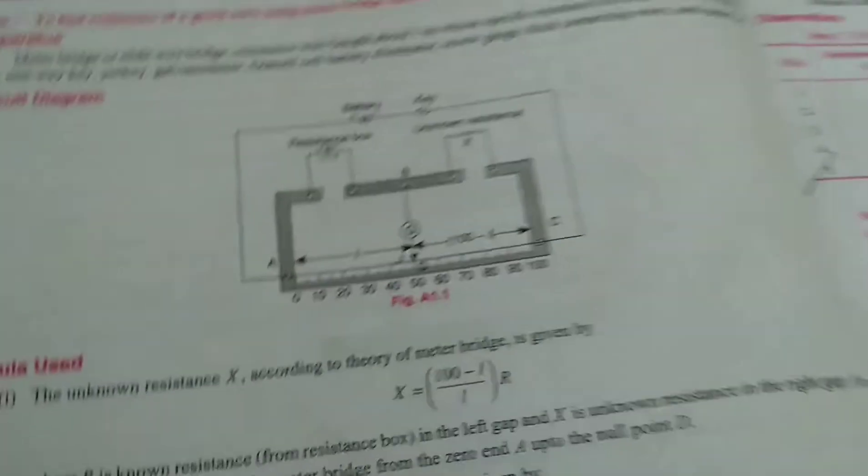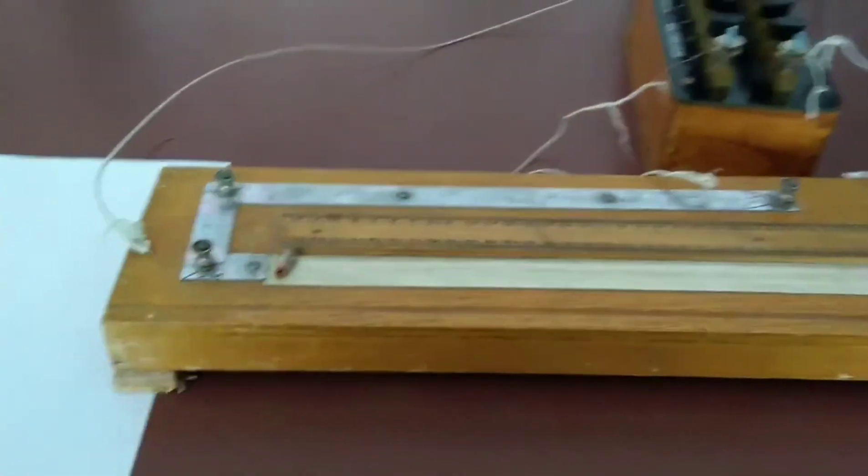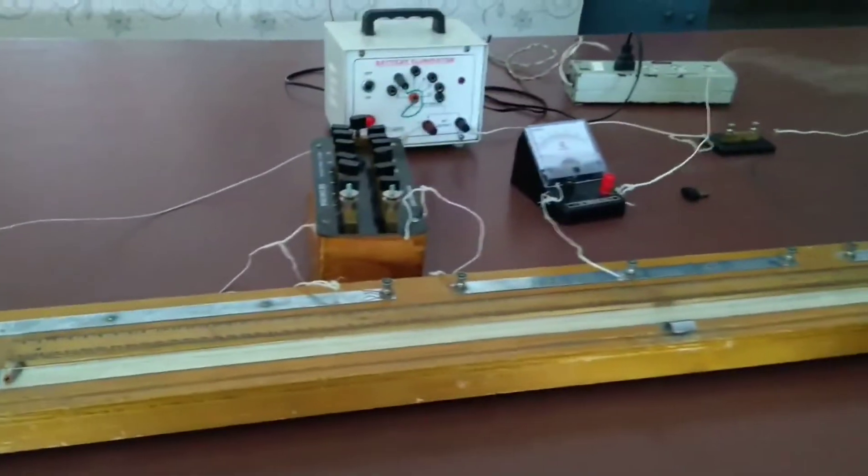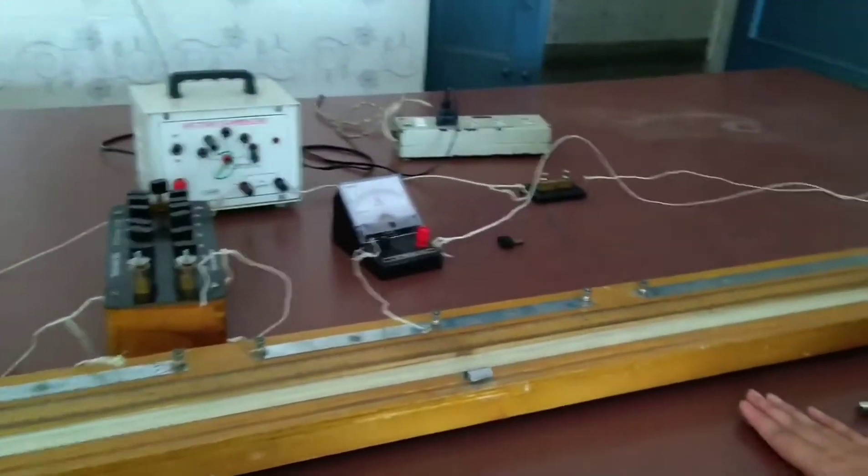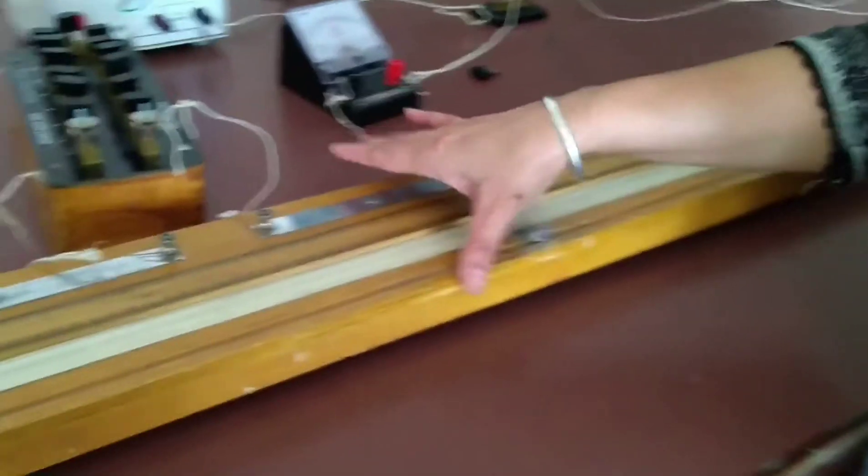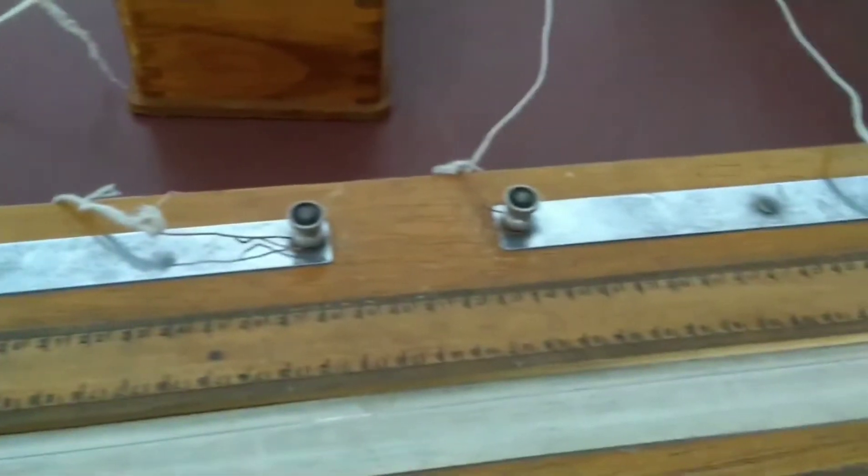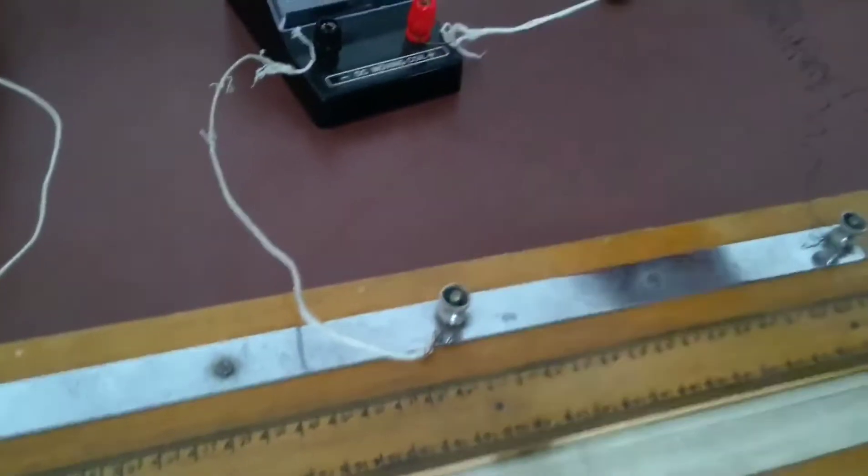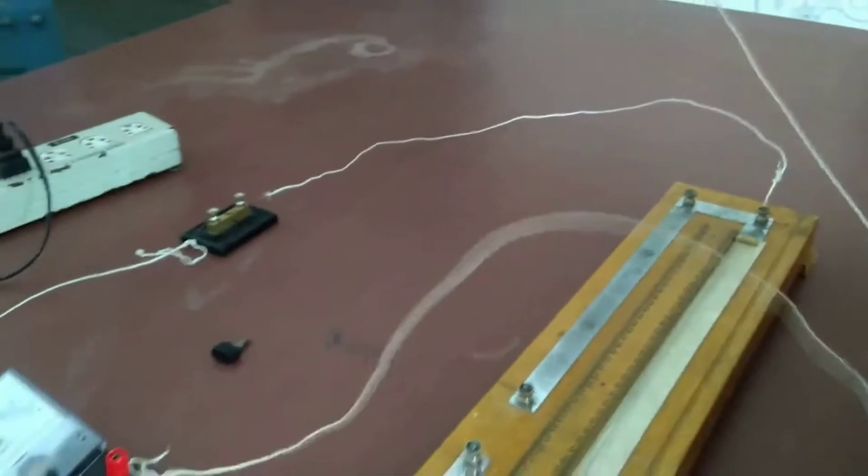Now come to the actual circuit diagram, the working circuit which is used to find the specific resistance. According to that circuit diagram, this is resistance box that is connected between these two terminals, galvanometer, and the second end of galvanometer is connected with this jockey that will be moved over this wire, one way key and battery eliminator.